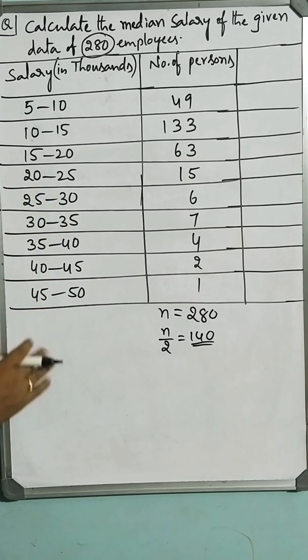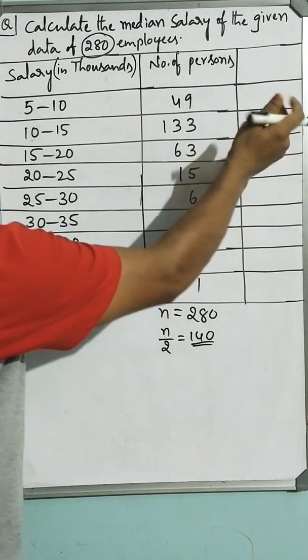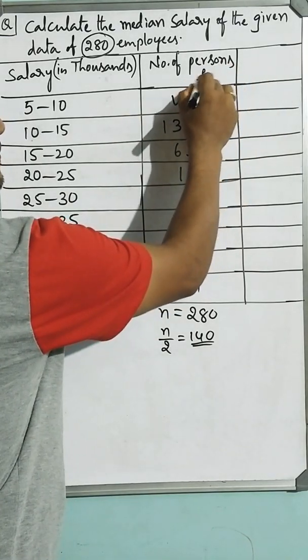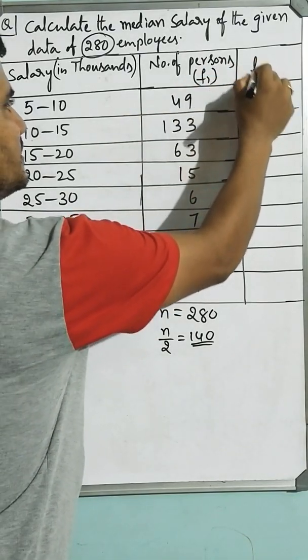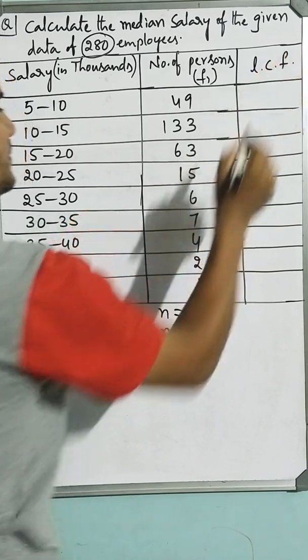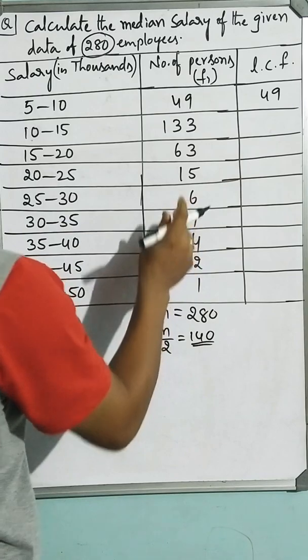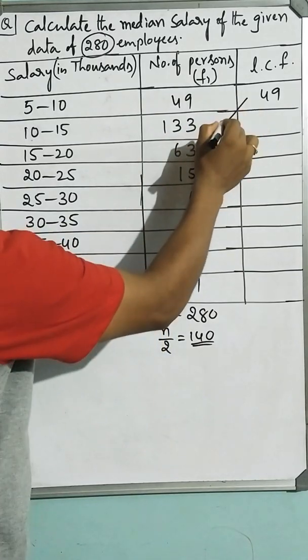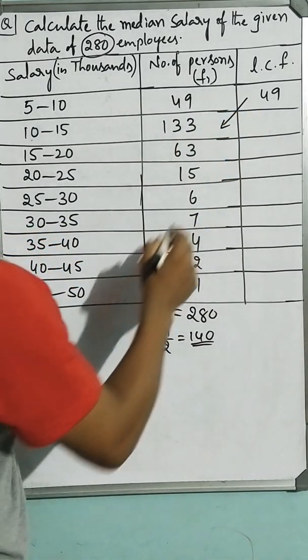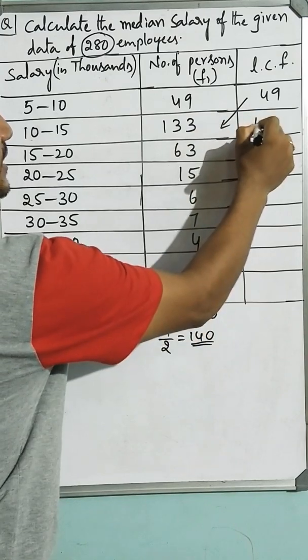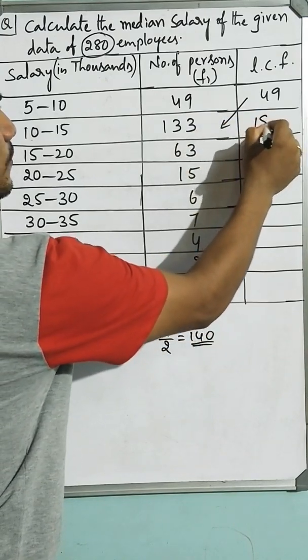To find median, you have to accumulate the frequencies. How do I write less than cumulative frequencies of the data? 49 plus 133, that is 182.